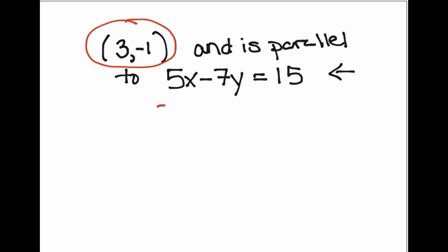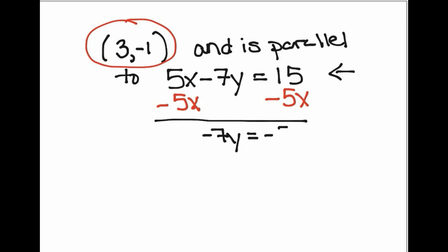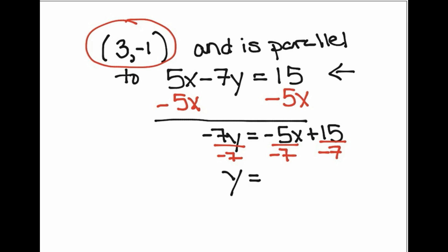Let's solve for y, because the way the equation is set up originally you can't tell what the slope is. The only way you can tell is if you get it into y = mx + b form. So I subtract 5x, then divide everything by negative 7. I end up getting y equals positive 5 over 7 x, and 15 divided by negative 7 is negative 15 over 7. Now that it's in y = mx + b form, I can clearly see the slope is 5 over 7.